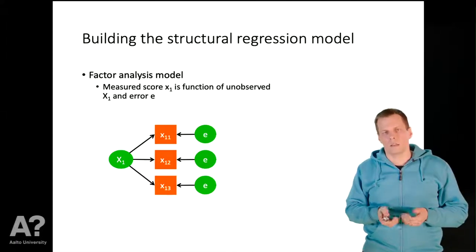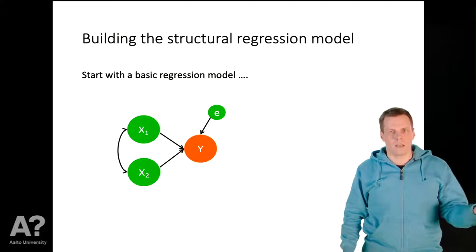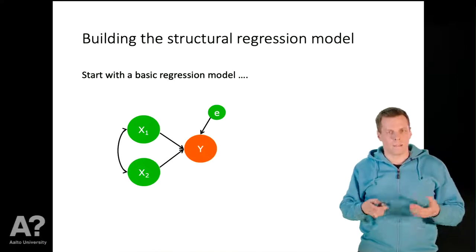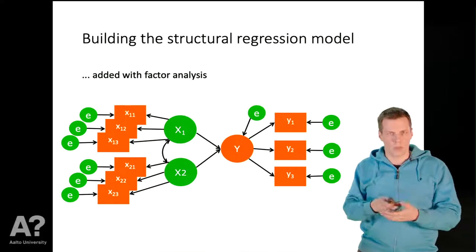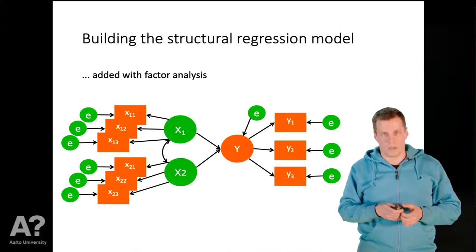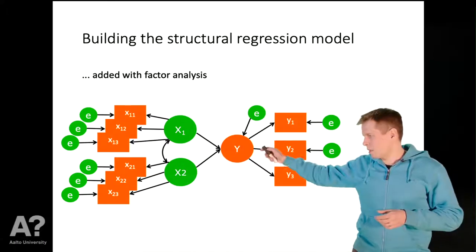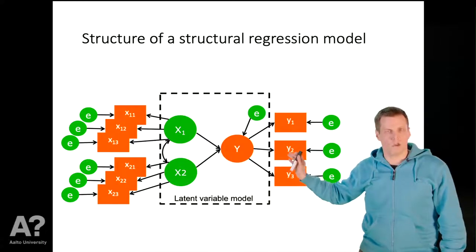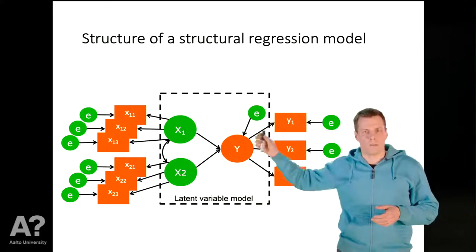The idea of the structural regression model is that we take these analysis approaches and combine them. We have a regression analysis model where instead of having indicators possibly contaminated with measurement error, we model a regression between latent variables X1, X2, and Y, and then we add the factor analysis directly to the model. This inner part with the latent variables is referred to as the latent variable model, sometimes called the structural model, though that is a bit misleading since the measurement relationships also have theoretical causal interpretations.